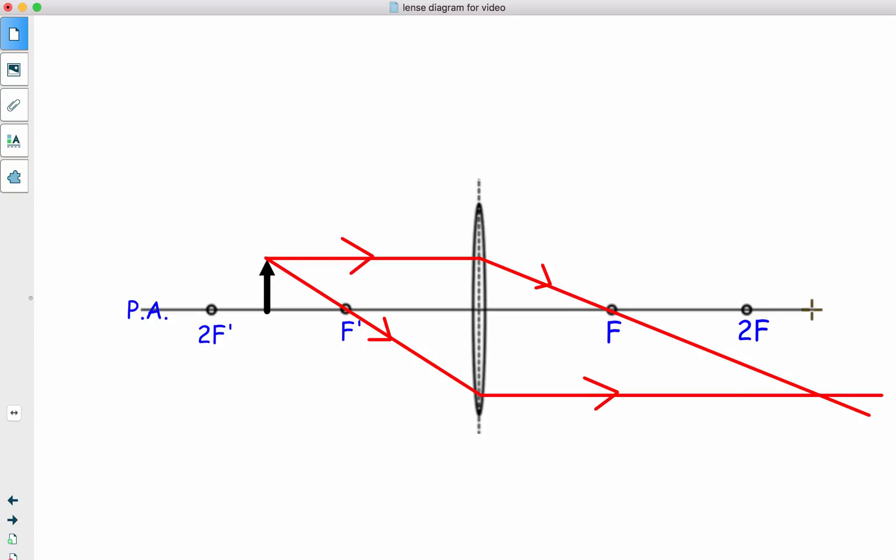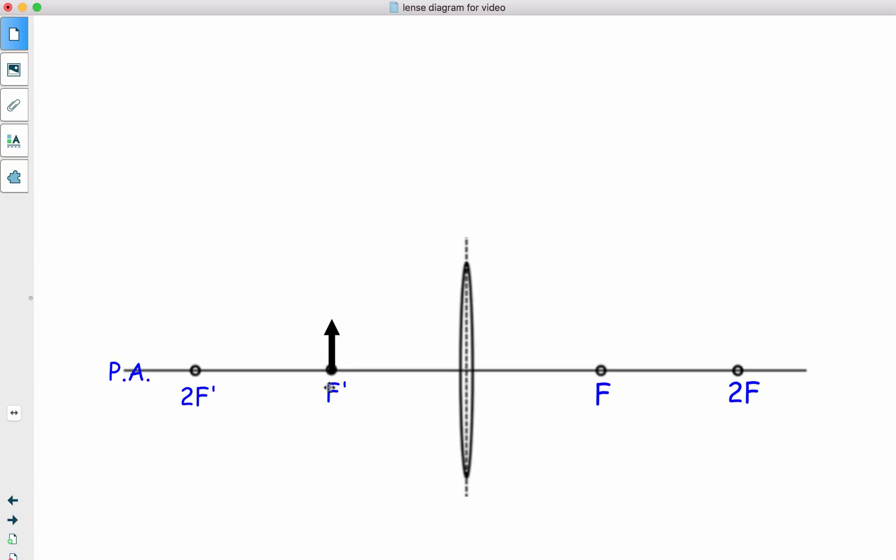And here is where we will have our image formed. I just got to move it over a tiny bit. So, image is larger than the object. It is inverted. It is located behind 2F. And it is a real image. And now for the last one.